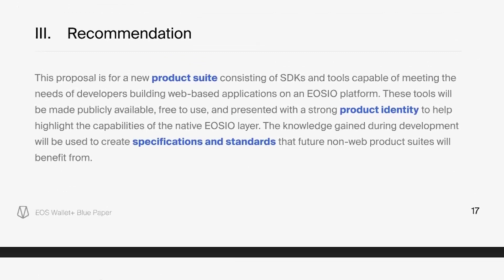The recommendation is to build a full product suite for the web environment for these SDKs. It will have its own identity, which could be bound to the new EOSIO branding efforts or be completely standalone. Examples from other ecosystems include Ethereum-branded tools, or more ambiguous names like Hardhat or Morales focused on specific ecosystems. The suite would have its own identity, and it would have more generic specifications and standards that will also apply to non-web SDKs.